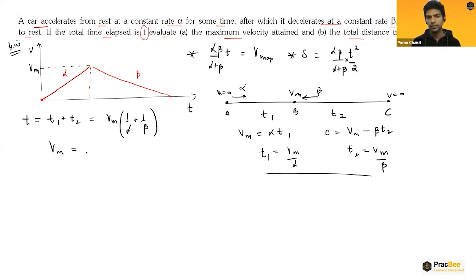It is equals to vm times 1 by alpha plus 1 by beta. Now this t1 plus t2 is t. So vm in terms of alpha beta will be alpha beta into t upon alpha plus beta. So we know what is the maximum velocity attained.